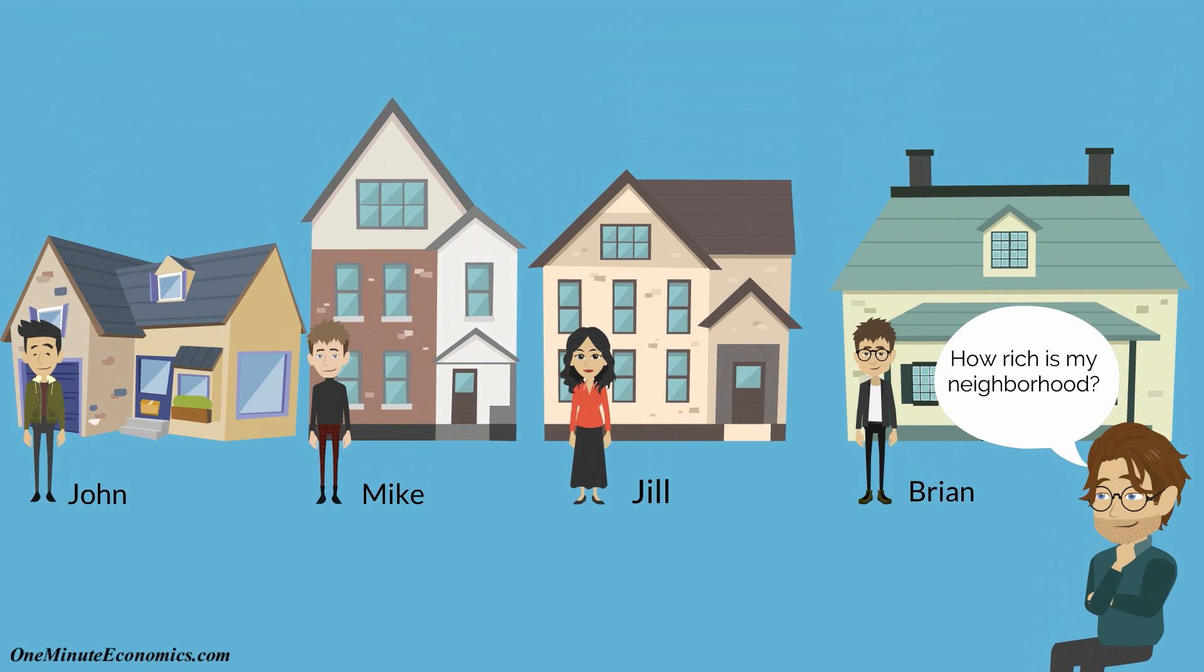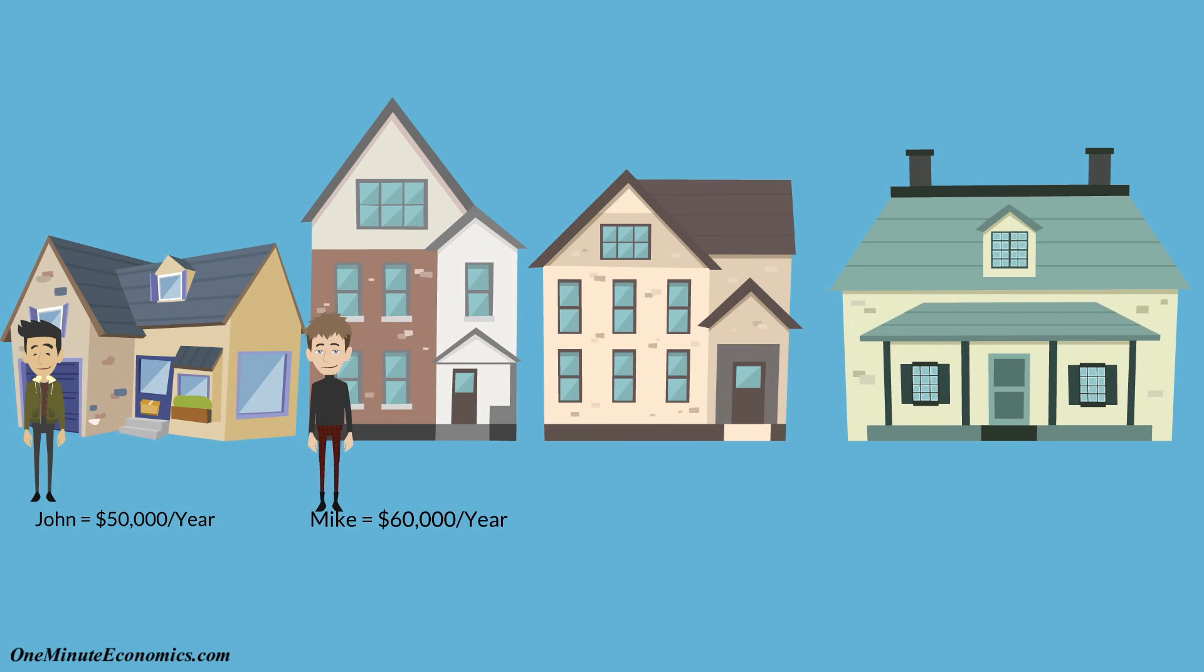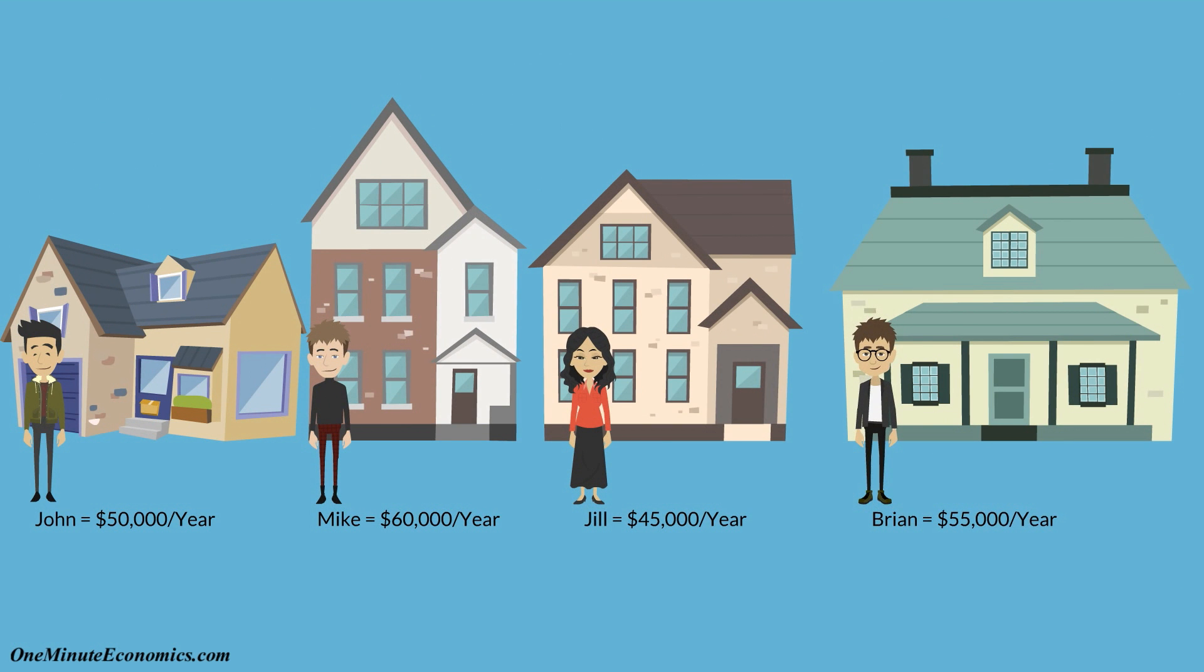Maybe you want to know how rich a neighborhood is. John makes $50,000 per year, Mike $60,000, Jill $45,000 and Brian $55,000.